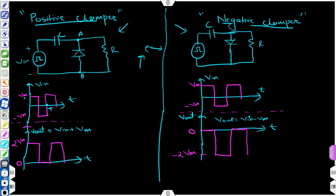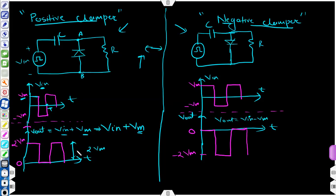The output waveform: if the input is Vm, then V_out equals V_in plus Vm. So Vm added to Vm gives 2Vm at the top. At the bottom, minus Vm added by plus Vm gives zero. So the output is a square wave swinging between 2Vm and zero, with the same time period T. The waveform is shifted in the upward direction by Vm.